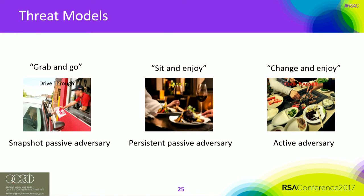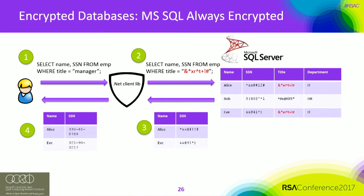Let me show three concrete SOPET examples. First, encrypted relational databases — products already on the market use this technique. Microsoft Always Encrypted uses property-preserving encryption: either deterministic encryption or randomized encryption, and users have the flexibility to choose which type. The client library automatically encrypts when data goes into the cloud and decrypts when it comes out, transparently to the user.